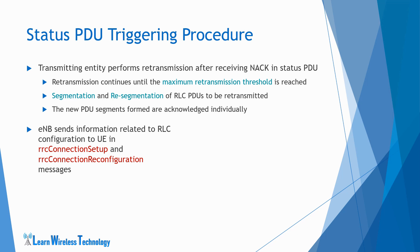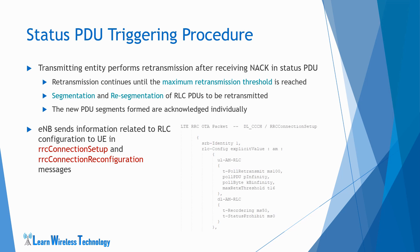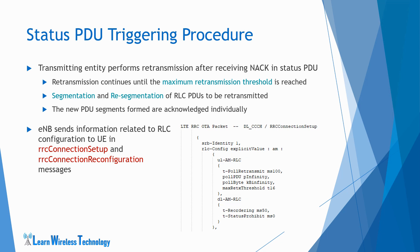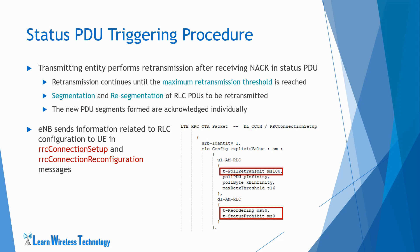The eNodeB commands the UE to either use RLC unacknowledged mode or acknowledged mode for signaling and data radio bearers using messages such as RRC Connection Setup and RRC Connection Reconfiguration. As can be seen in this RRC Connection Setup Message example, it contains all the information pertaining to RLC mode configuration. The eNodeB commands the UE to use acknowledged mode in uplink and downlink. It contains information elements giving the value of parameters required for polling procedure such as poll PDU and poll byte, retransmission parameter such as max retransmission threshold, and timers such as poll retransmit timer, reordering timer, and status prohibit timer.